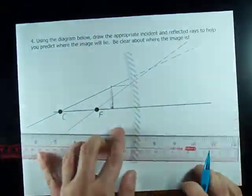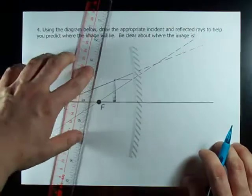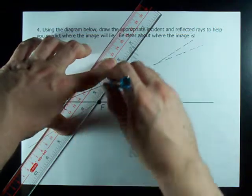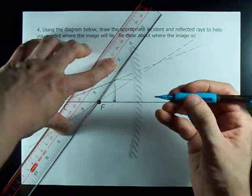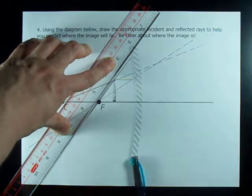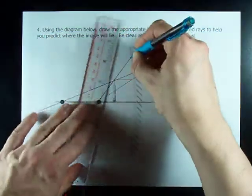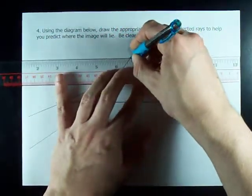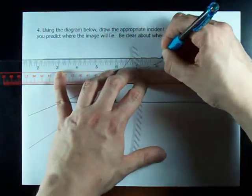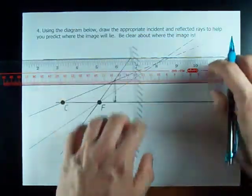Last one. I have to start at the pencil tip and go through F. Pencil tip to F. Did that work? Yeah it did. I shouldn't have brought it that far. But in any case it bounces back straight across. Straight across and dotted line just in case it's virtual.